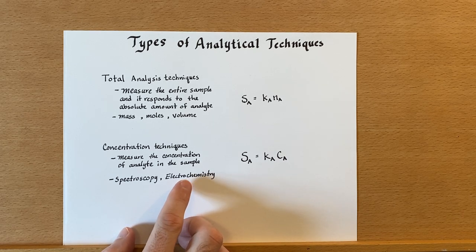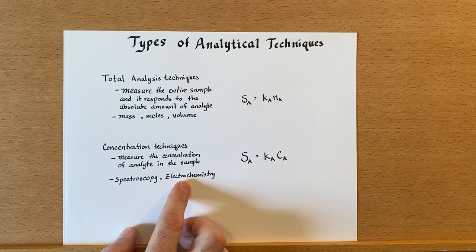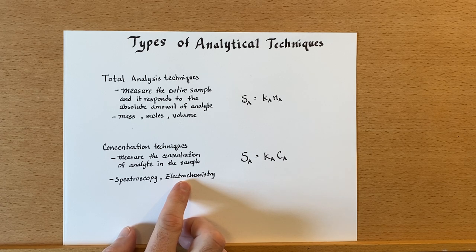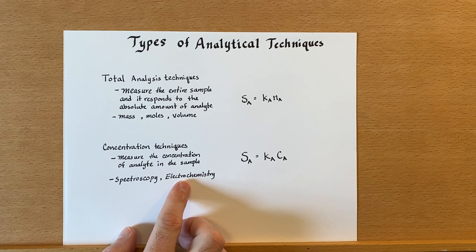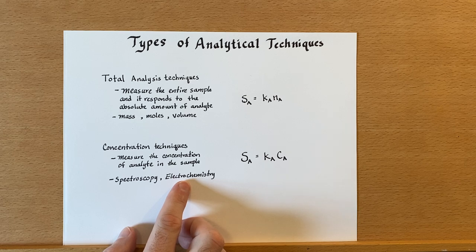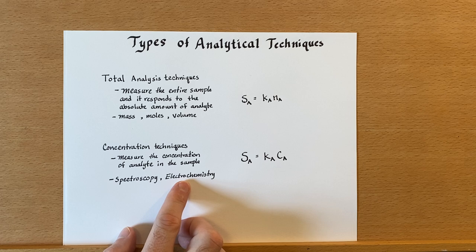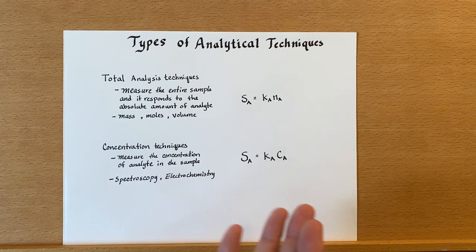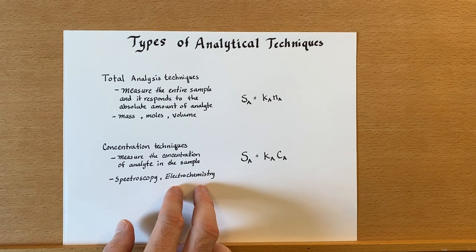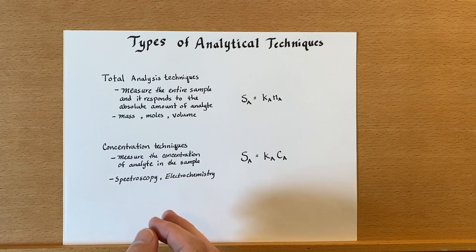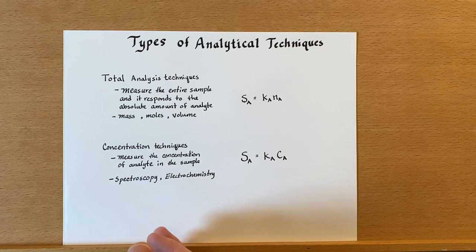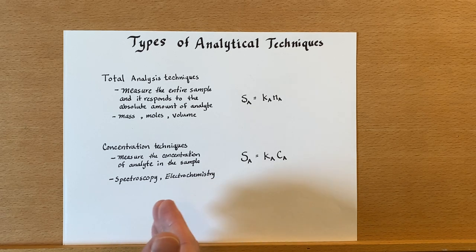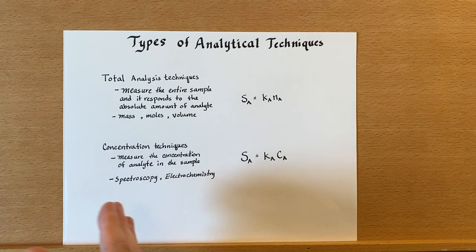And then we also have electrochemistry techniques, which are proportional to the concentration of the analyte. Using things like the Nernst equation in a voltaic cell, we can determine that. There's also current based techniques like amperometry, cyclic voltammetry. There's a lot of different electrochemistry techniques that we can use that are proportional, generate a signal in proportion to the concentration of the analyte.